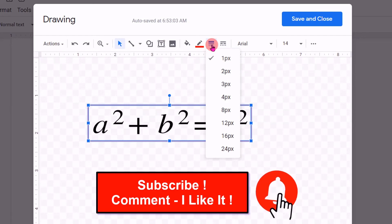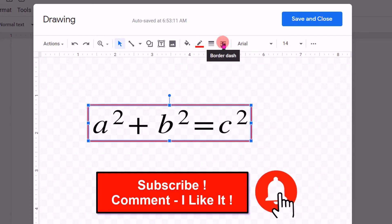From here, you can select the thickness of the border. You can also border dash here. Here you have various options. You can select any one.